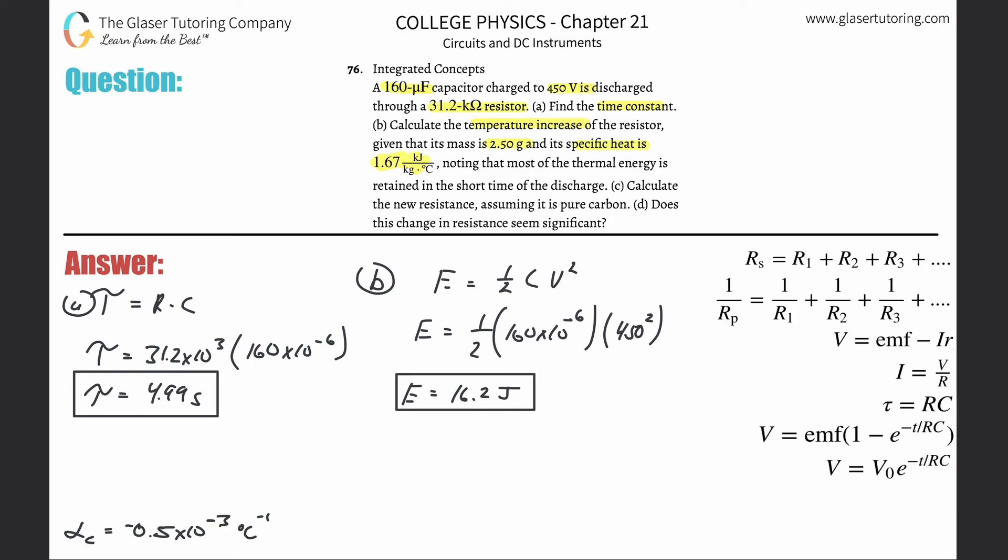Now it doesn't want to find energy, it wants us to calculate the temperature increase. When I see a mass and a specific heat, I know I'm going to be using Q is equal to mc delta T, and Q represents the heat energy. The energy of the discharge here is converted into heat energy, so to solve for change in temperature, I just got to divide the mass and the specific heat out.